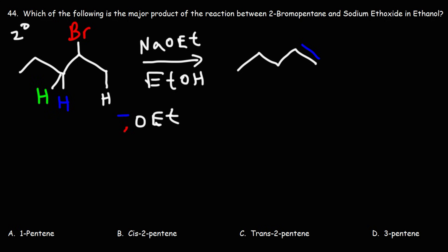Now if it goes for the blue hydrogen, we're going to get 2-pentene. Now it can go for the blue hydrogen or the green hydrogen. So we can get a mixture of products here. Depending on which one it goes for, we can get trans-2-pentene or we can get cis-2-pentene.